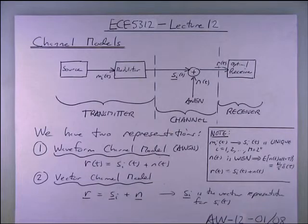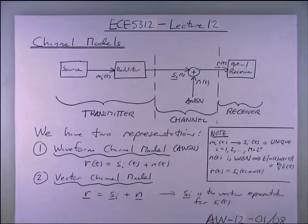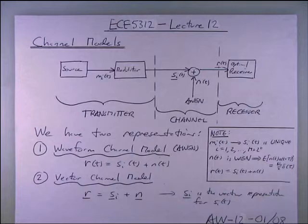The waveform r(t) = s_i(t) + n(t) — transmitted signal plus noise — that's exactly how it works in real life. The receiver only sees r(t); it does not see s_i(t) — the signal is hidden behind the noise. We've got to make a decision. The vector model is straightforward: vector r = vector s_i + vector n.